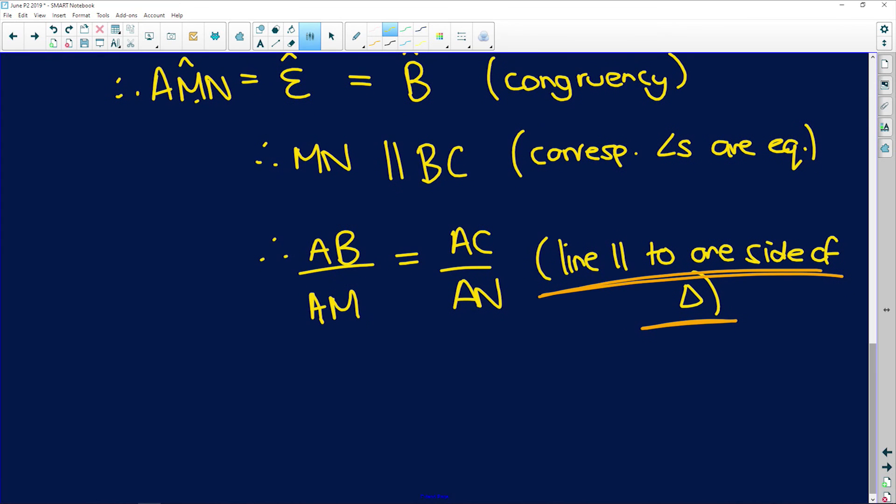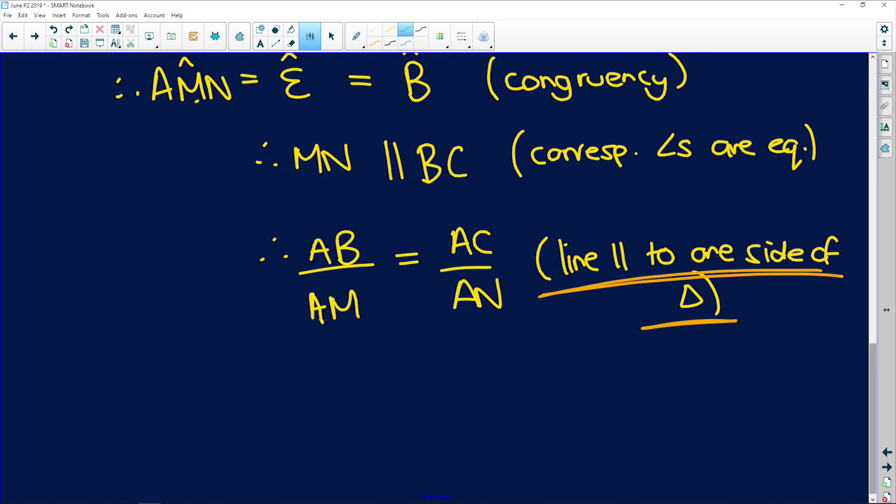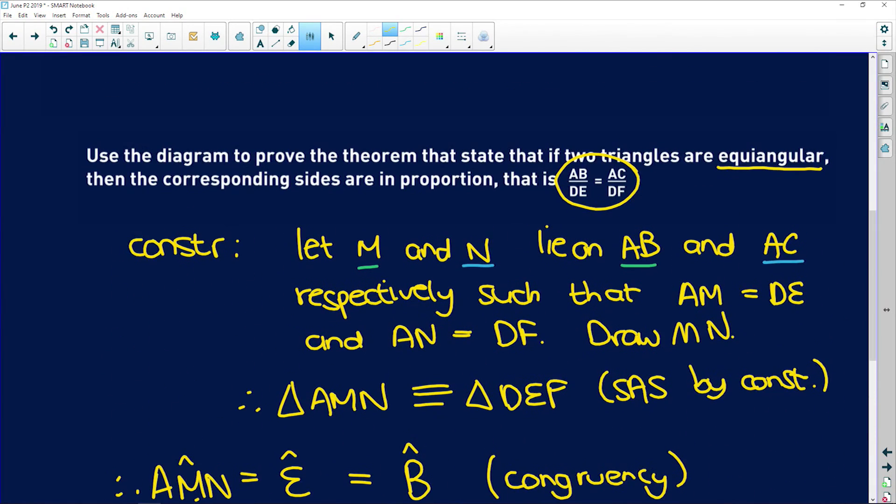And now, because, guys, remember we constructed AM so that it is equal to DE in the original little triangle, and AN is equal to DF in the original little triangle. So therefore, AB over DE is equal to AC over DF. And that is exactly what we had to prove over here.